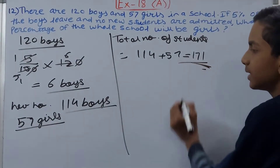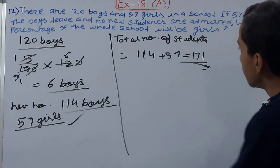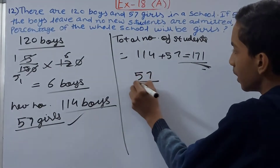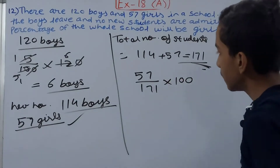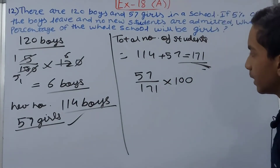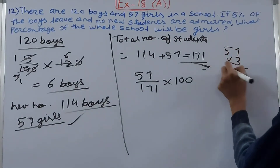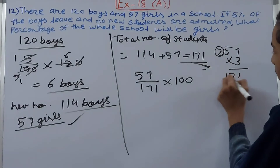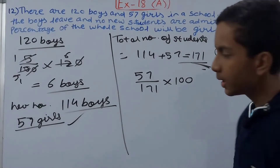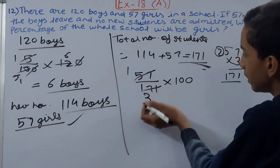Out of 171 students, 57 are girls. To find the percentage, this becomes 57 upon 171 into 100. Let's see — 171 goes 3 times into 57, so we cancel to get 1 upon 3.